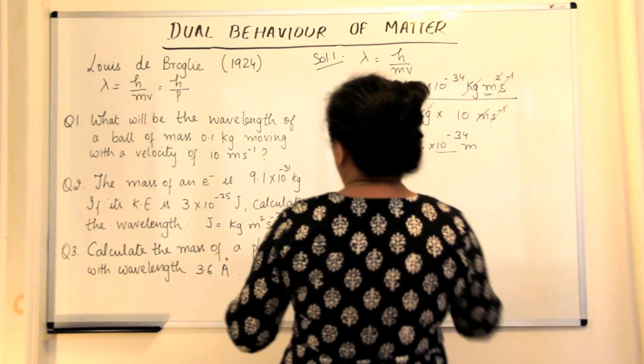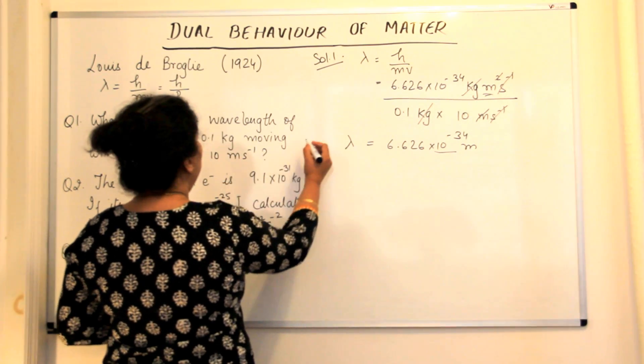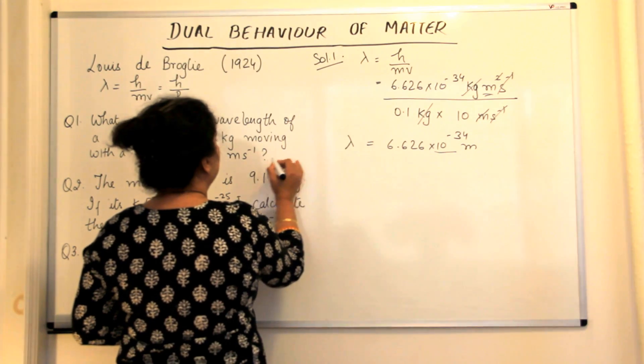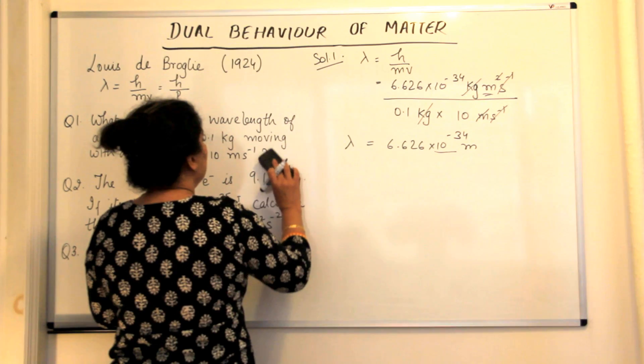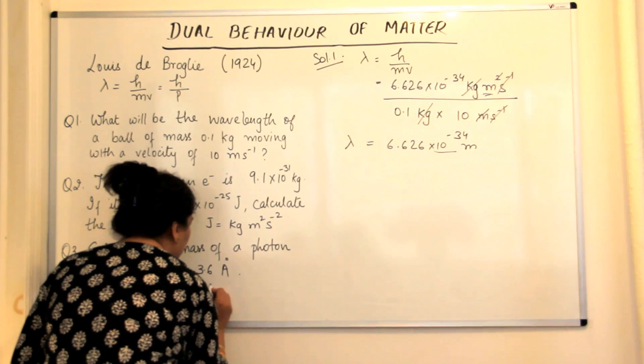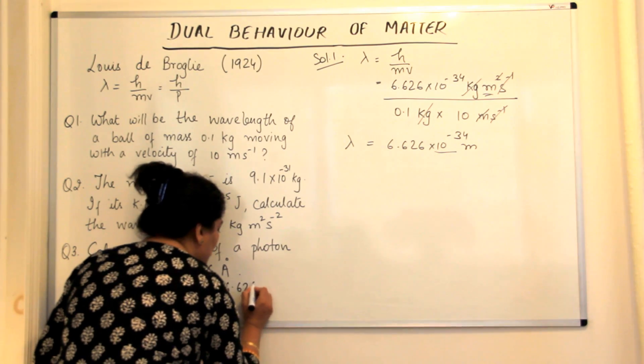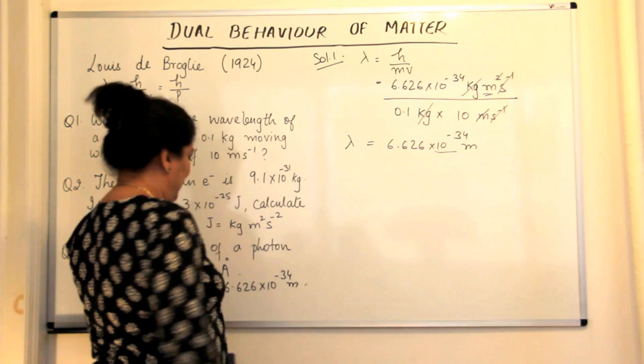Now for record, I would like to just write down this answer here so that we can compare all three answers in the end. Solution 1: 6.626 into 10 to the power minus 34 meters is the first answer.